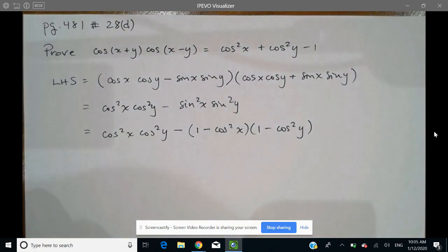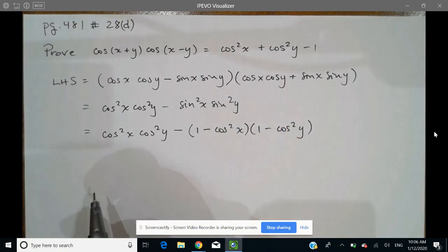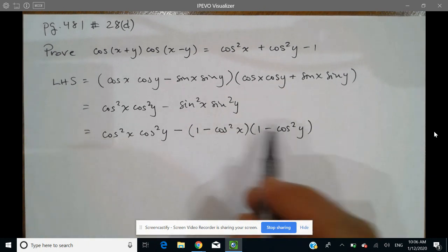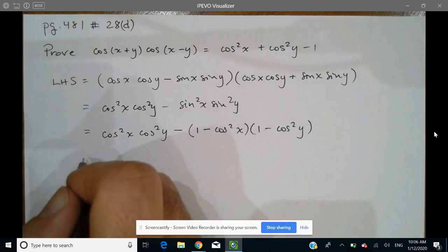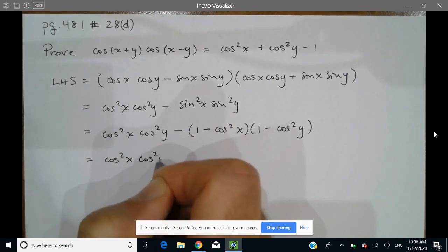And so now at the very least, I've got everything in terms of the same expressions as I have on the right-hand side. So here I don't really see anything else but to distribute these two binomials. So I'll leave this here, cos squared x, cos squared y. I won't touch that yet.